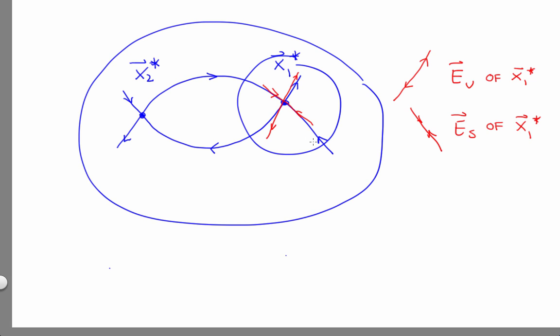By the way, that thought experiment that we did earlier in this segment, dropping a ball a little way out the eigenvector and watching where it goes, is actually the algorithm for finding the stable and unstable manifolds. Spoiler alert, you need to run time backwards to find the stable one.